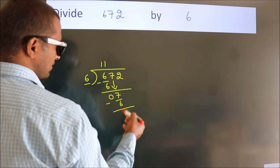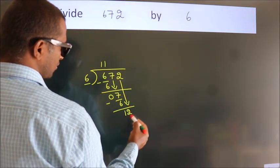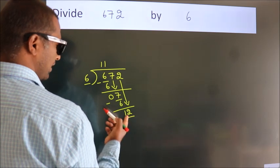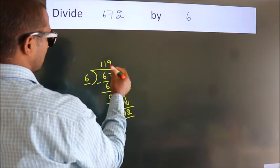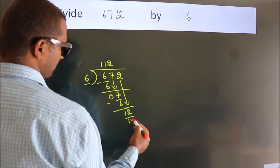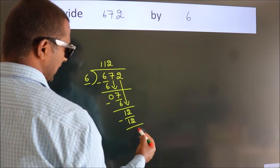After this, bring down the beside number, so 2 down, so 12. When do we get 12? In 6 table, 6 2s, 12. Now, we subtract, we get 0.